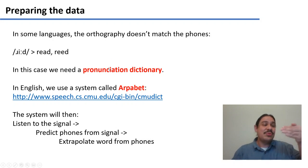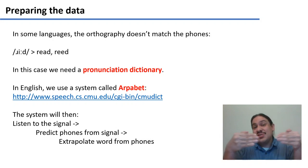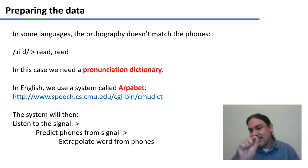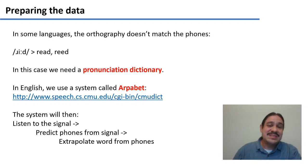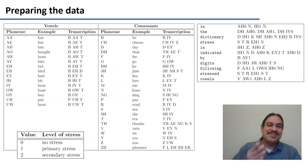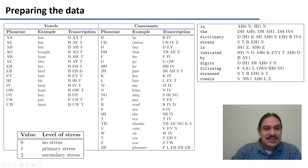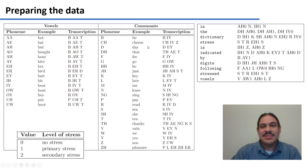A pronunciation dictionary has the orthographic forms and then the pronunciation forms described with some system for the phones of the language. A very important one for English is called the CMU dictionary, which uses a system called ARPABET. This is ARPABET for English — it describes the phones of English, with AA for 'bot' but AE for 'bat', and it also tells you about stress levels.